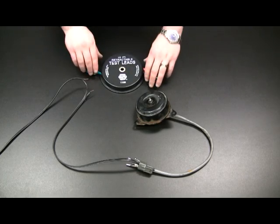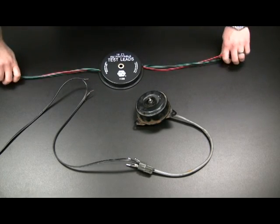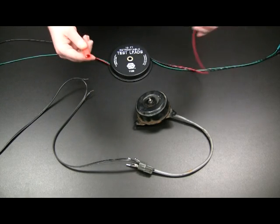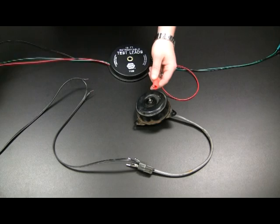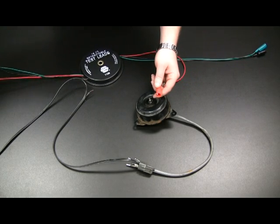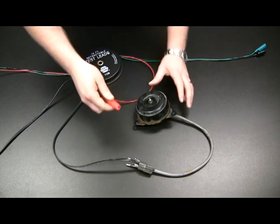To use the test leads to bypass a circuit in question, simply unwind the leads and attach one of the sets of ends to a 12-volt source. Next, attach the other set of ends as close to the electrical component in question as possible.